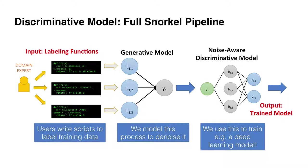This revisits the full Snorkel stack: we start with writing labeling functions, which encodes our weak supervision; we pass that to our generative model; we learn latent weights corresponding to accuracies of our labeling functions; we learn the latent true label and emit a marginal probability; then we feed it into a discriminative model. In this context we're looking at an LSTM — a long short-term memory — which is just a neural network. This also works with logistic regression and basically anything where we can modify the loss function.